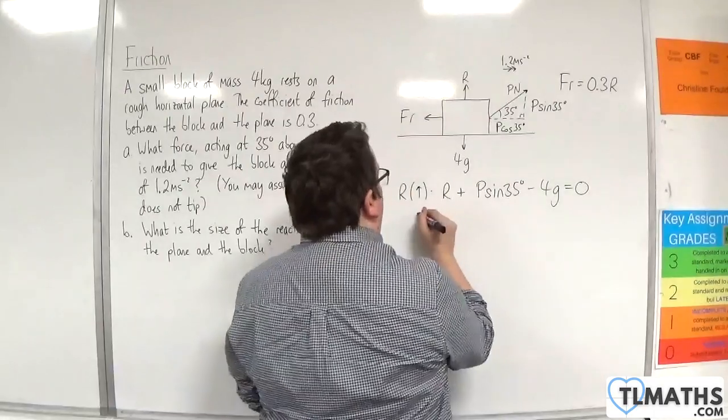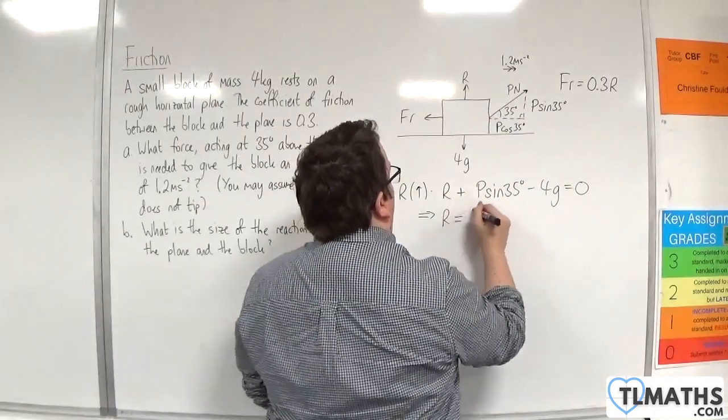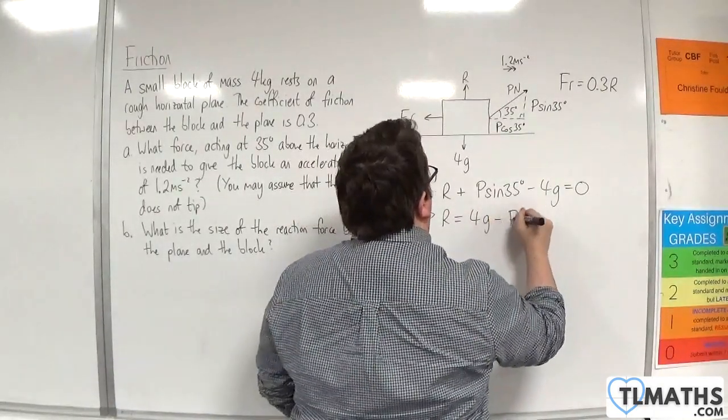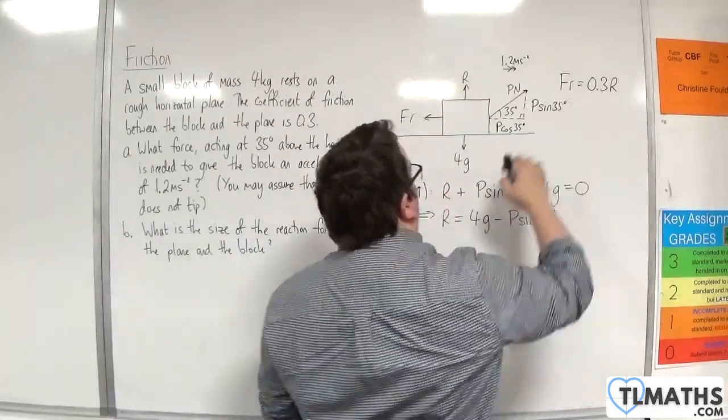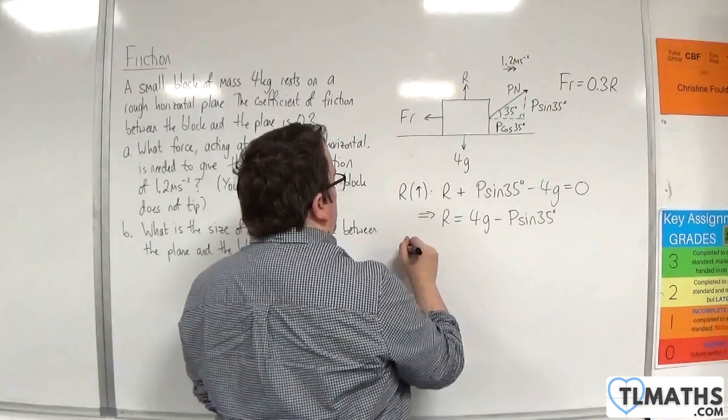So this is telling me that R is 4G take away P sin 35, which I can then substitute directly into here to work out my friction.